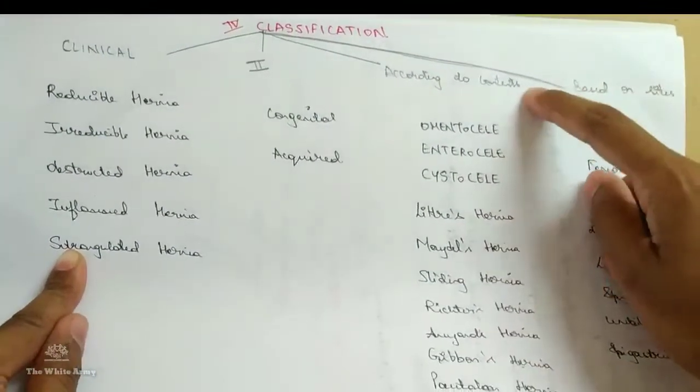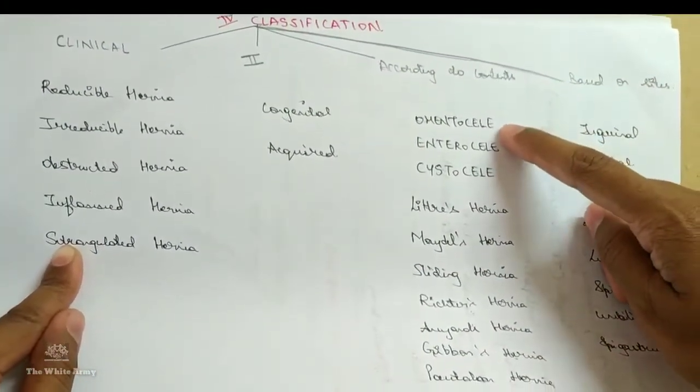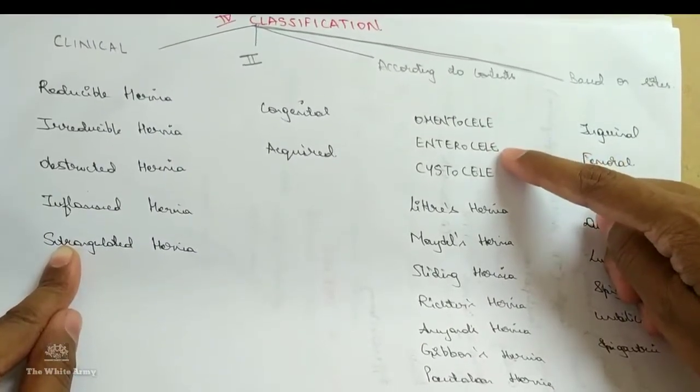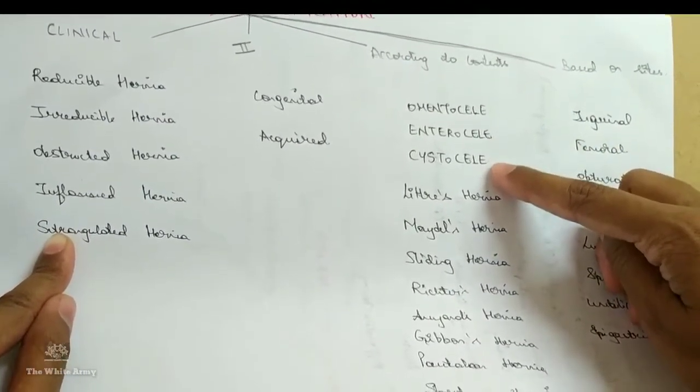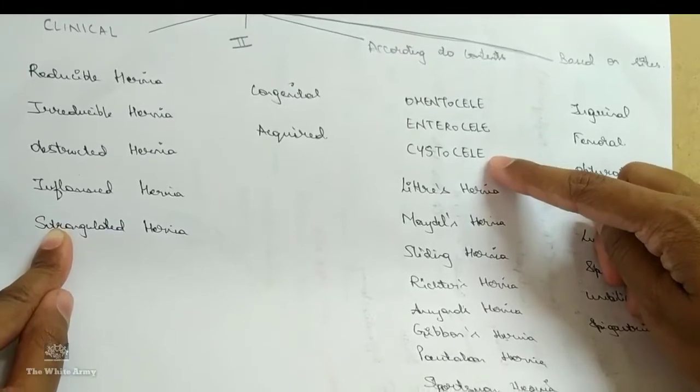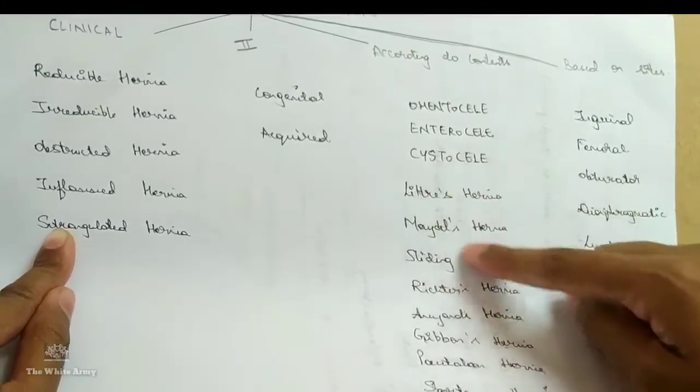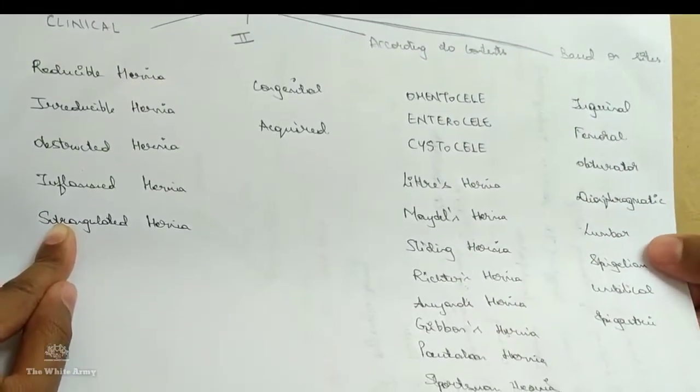According to the contents, it is mainly omentocele which contains omentum, enterocele, intestine, cystocele, urinary bladder. These are some hernias with fancy names which can be asked as an MCQ.